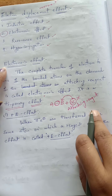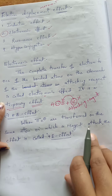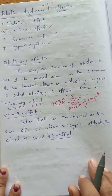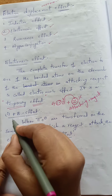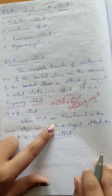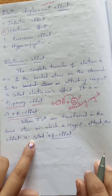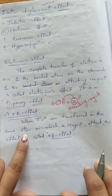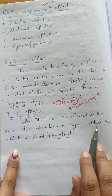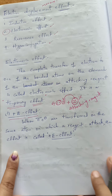There are two types of electromeric effect: positive electromeric effect and negative electromeric effect.